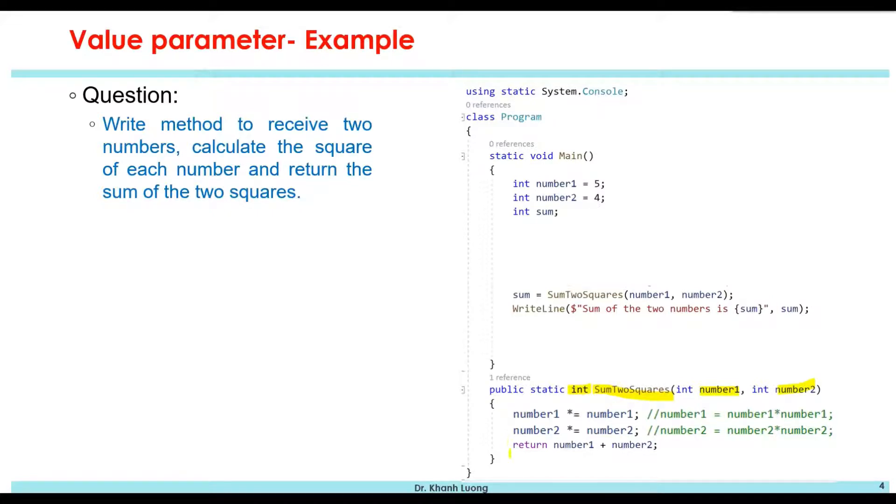Inside the method body, we calculate the square of each number first. So I write number1 equals number1 multiplied by number1, and number2 equals number2 multiplied by number2. And after that, we return the sum of the value of number1 plus number2 at that moment.